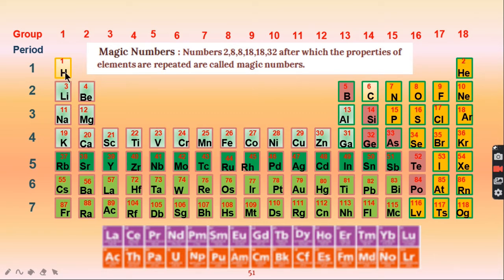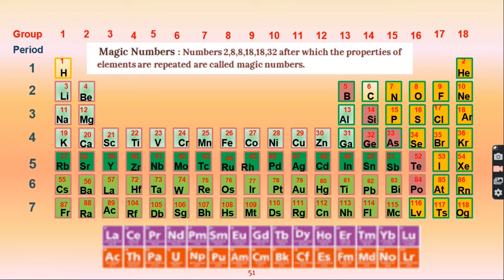For example, hydrogen has atomic number 1. Adding the first magic number 2 gives 3, which is lithium — having similar properties to hydrogen. Adding the next magic number 8 gives 11, sodium. Adding 8 again gives 19, potassium. Adding 18 gives rubidium. So after these magic number intervals, properties of elements repeat.